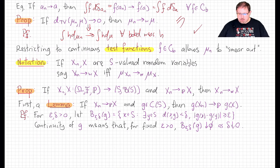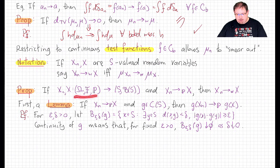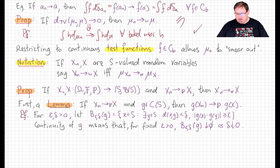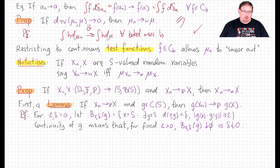The result is that even the weakest among those — convergence in probability — is still stronger than weak convergence. If X_n is a sequence of random variables and X is another random variable, all defined on the same probability space taking values in the same metric space, then if X_n converges in probability to X, then X_n also converges weakly to X. To prove this, we need to first prove the following lemma.